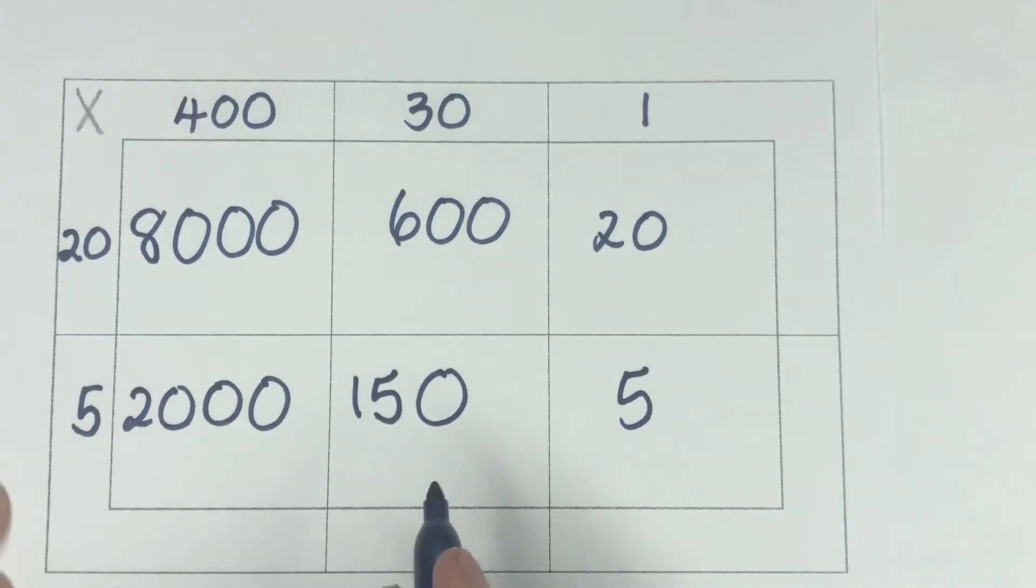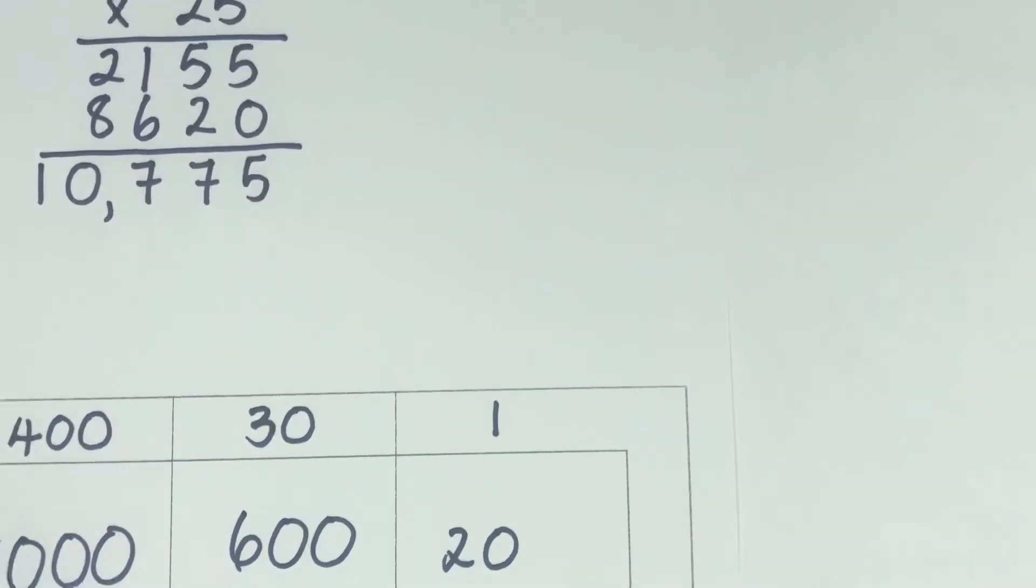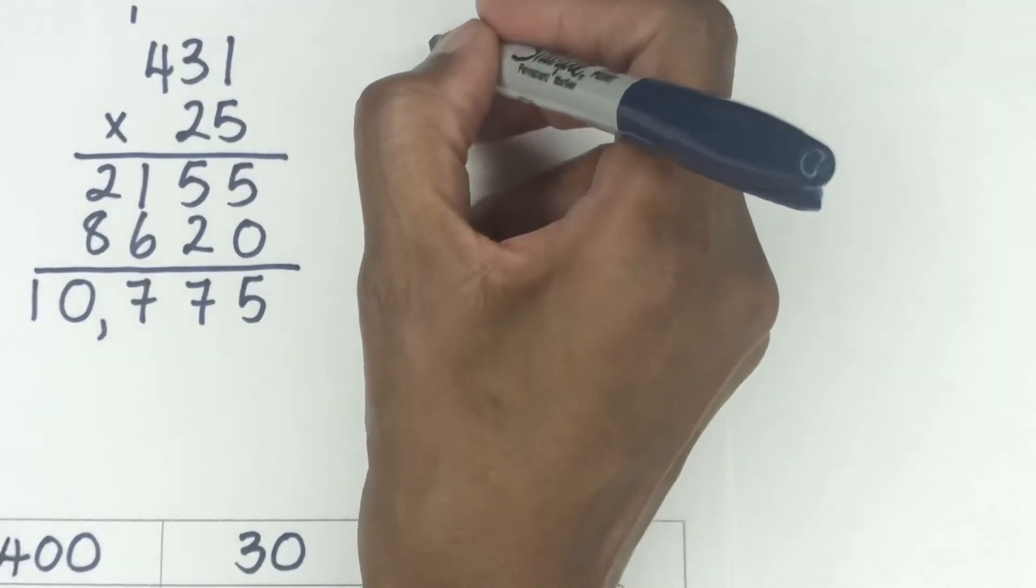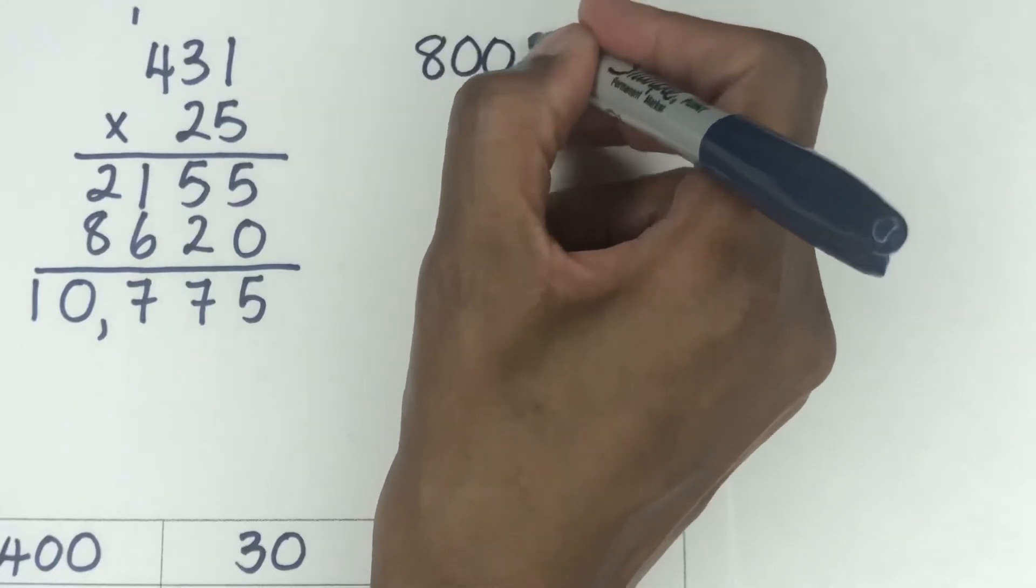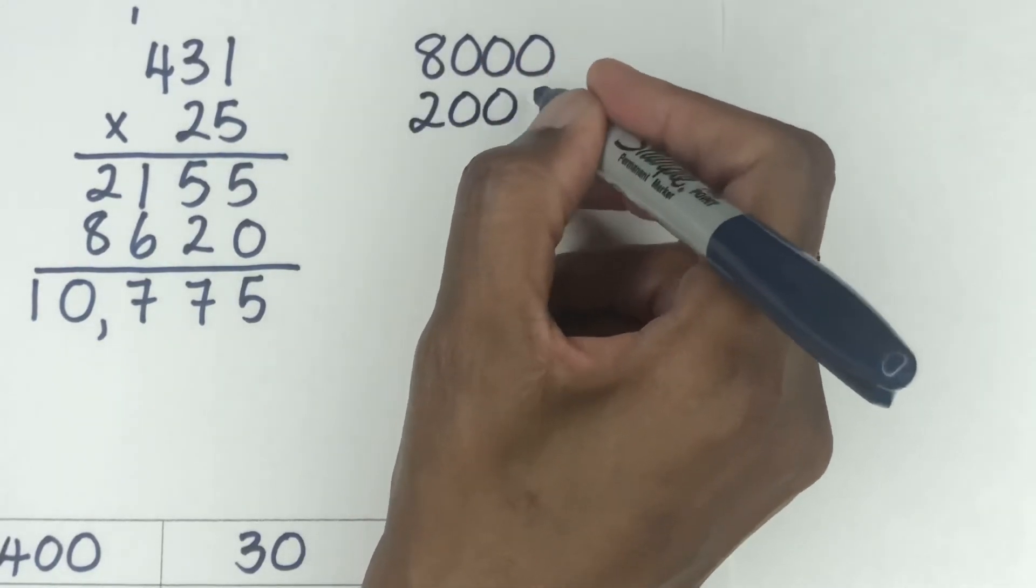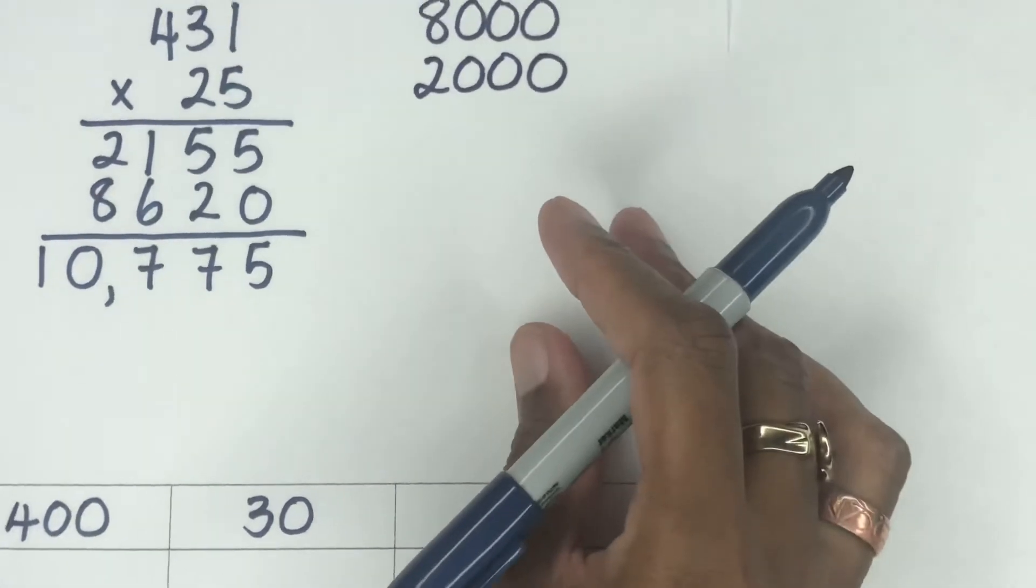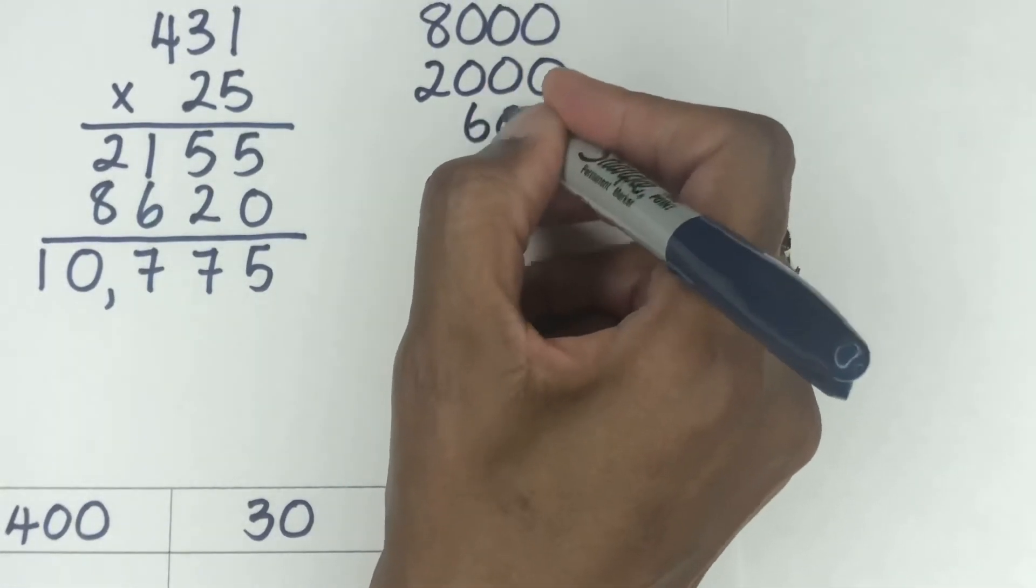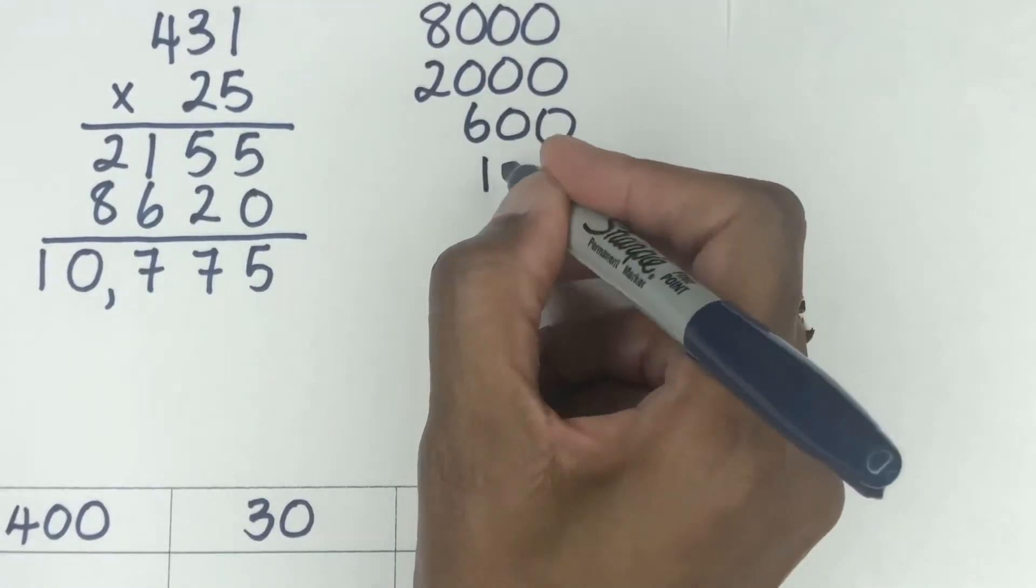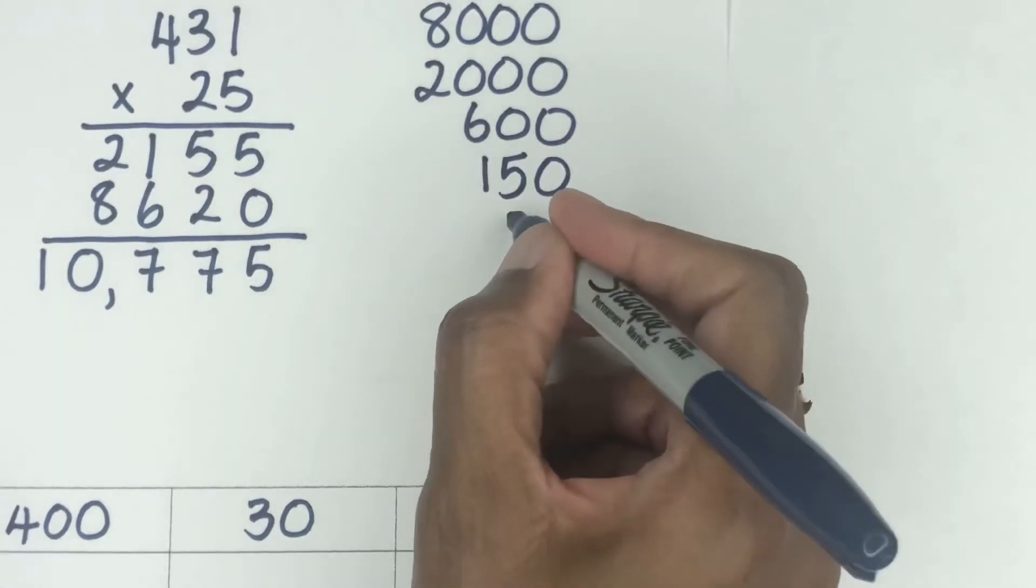Then you add all the boxes up and we should end up with the same answer. So let's do that. I'm going to do that over here. So we have 8,000, which was in the first box. It's best to put all the numbers, the biggest numbers first and then come down. Then we had 600, 150, 20, and then five.